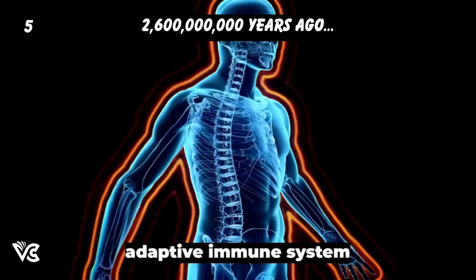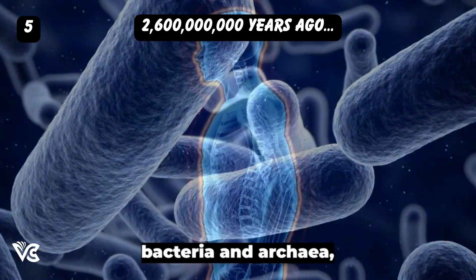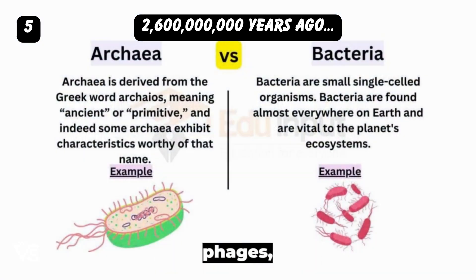CRISPR-Cas is an adaptive immune system existing in most bacteria and archaea, preventing them from being infected by phages, viruses and other foreign genetic elements.